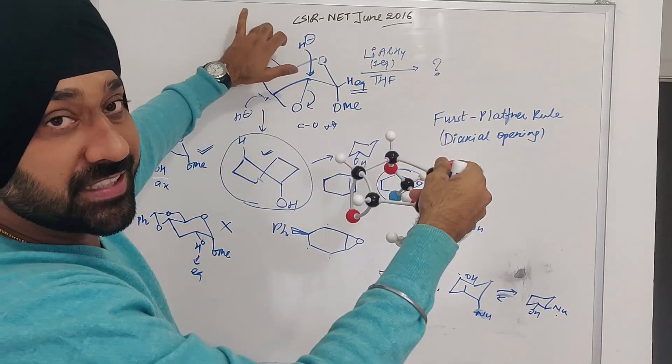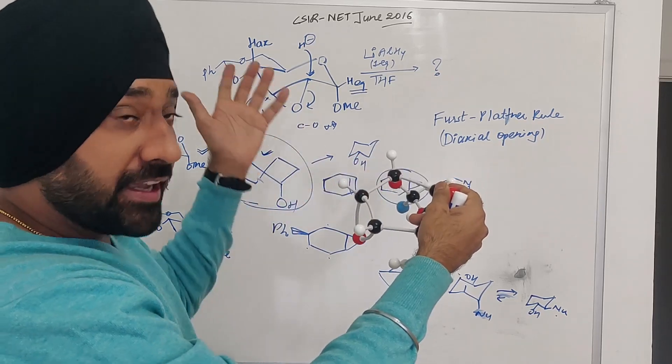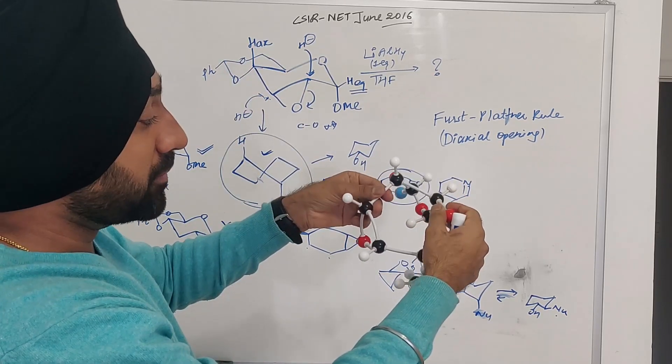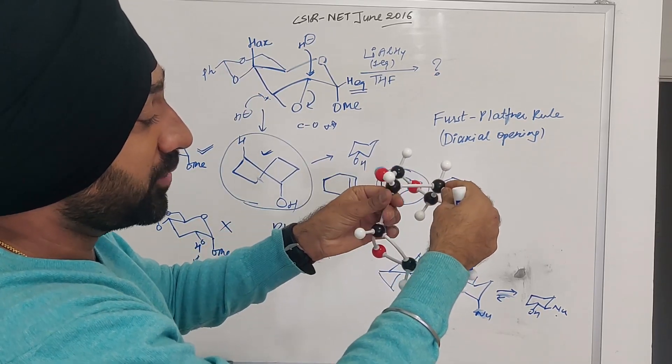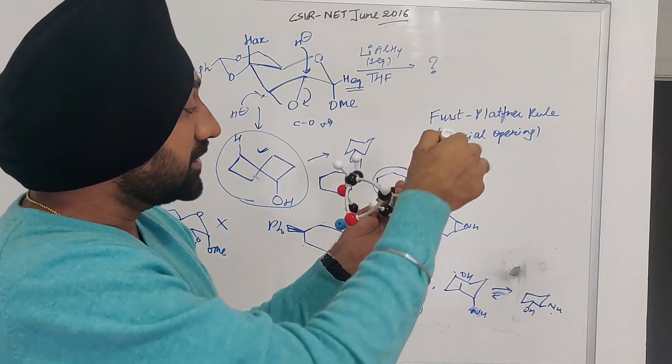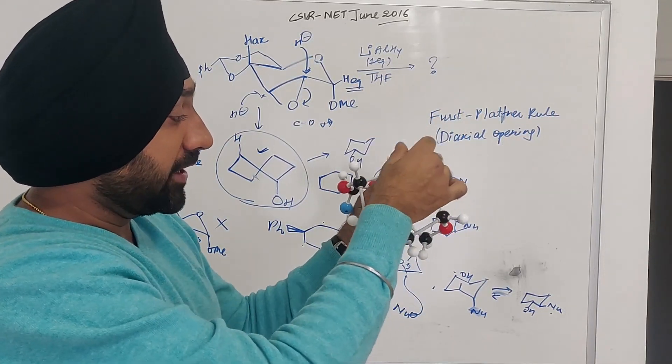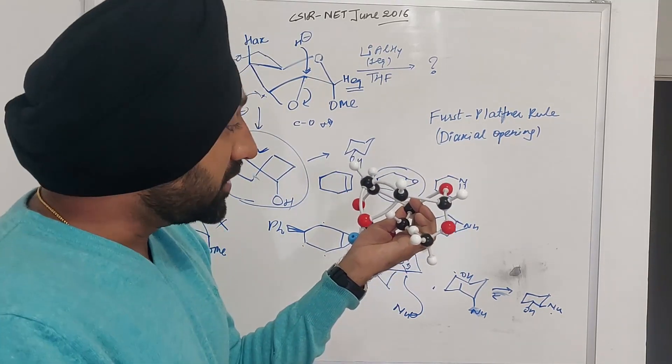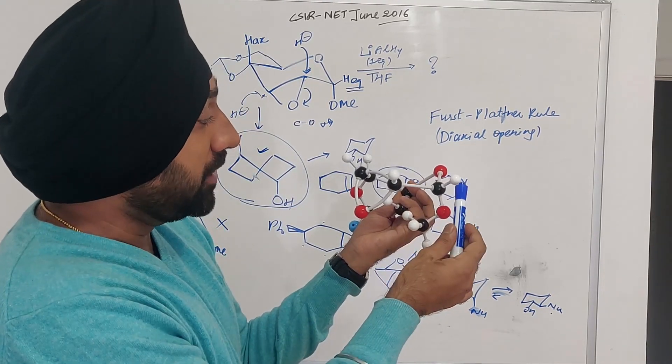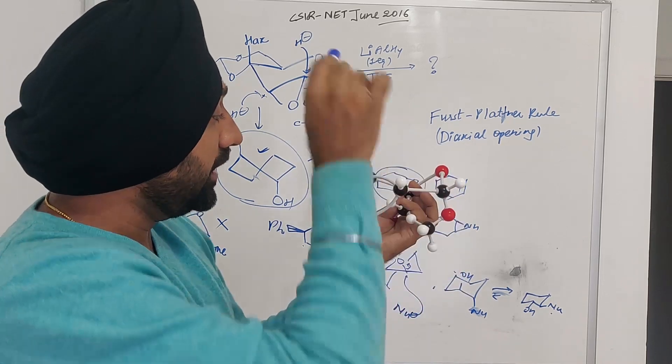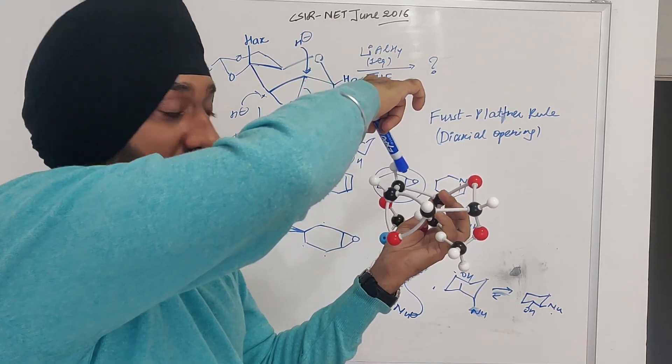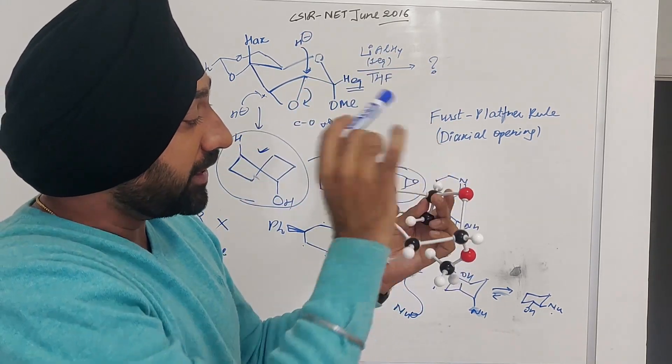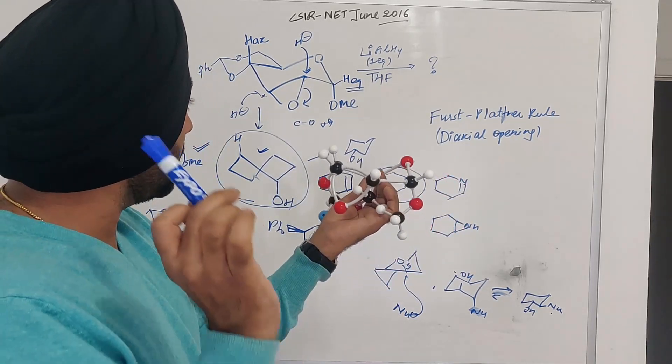This is a six-membered ring. This is also a six-membered ring chair form. If you look at it, we always talk about alternate confirmations. We always talk about hydrogen equatorial. This is a hydrogen equatorial. This is equatorial.